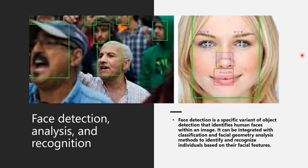Then comes face detection, analysis, and recognition. It is a specific variant of object detection that identifies human faces within an image. It can be integrated with classification and facial geometry analysis methods to clearly identify and recognize individuals based on their facial features. It is very easy and very interesting too.